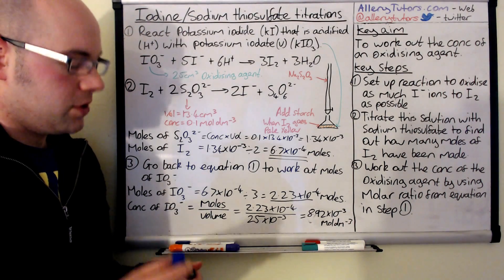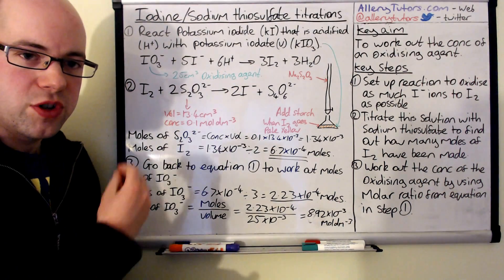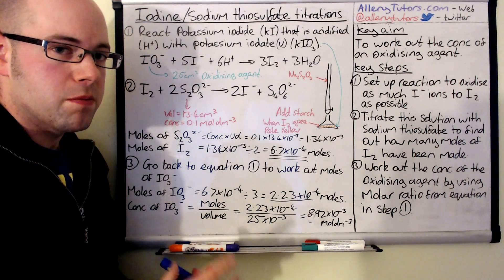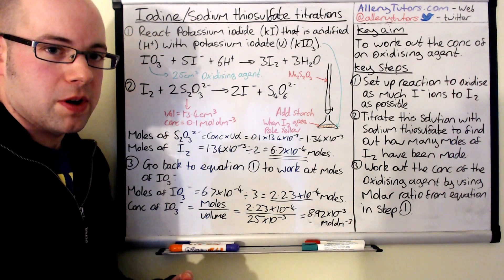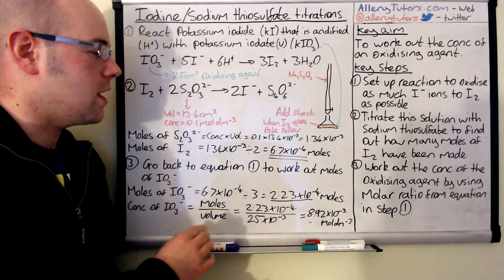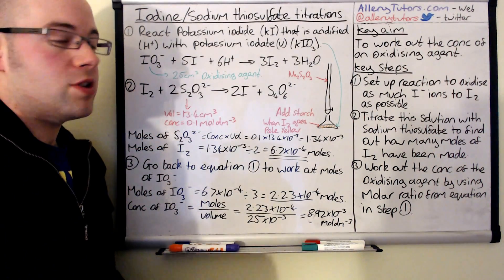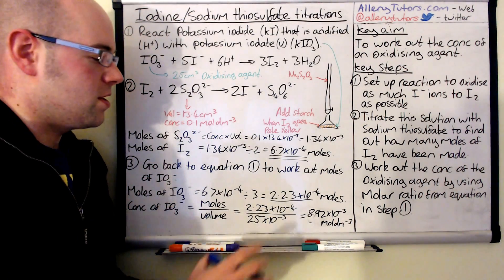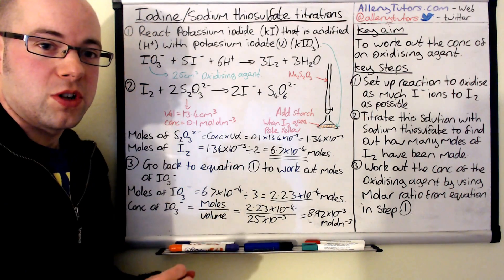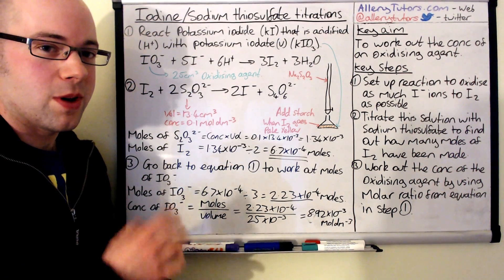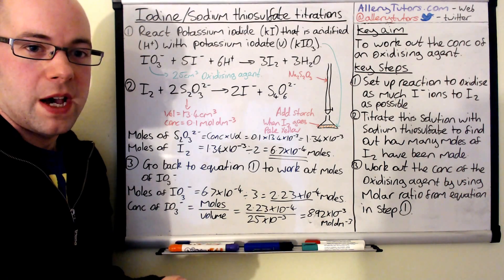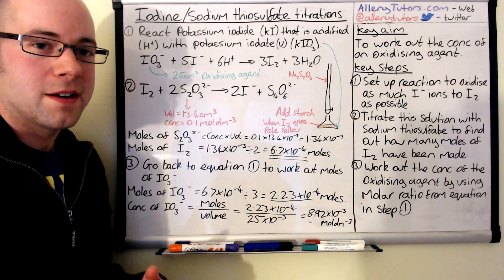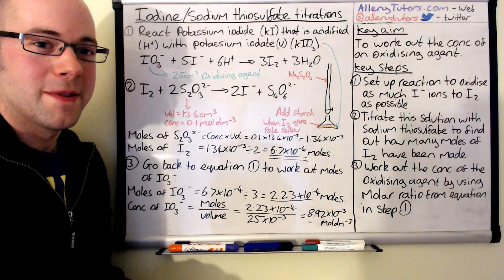In summary: first, set up your reaction to produce iodine. Then titrate with thiosulfate to find the moles of iodine produced by the oxidizing agent. Finally, go back to your original equation, work out the moles of iodate ions, and calculate the concentration. I did this video as a result of a subscriber request, so if there are other videos you'd like, let me know and I'll get them done as soon as I can.